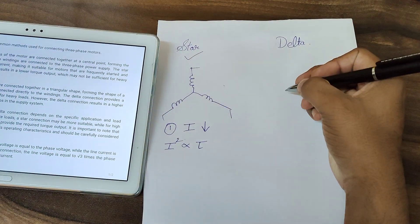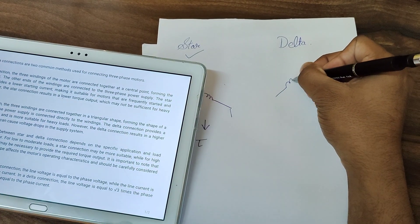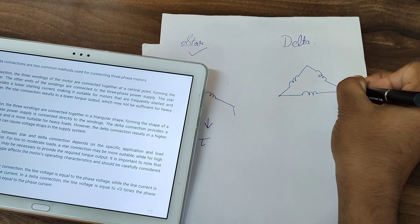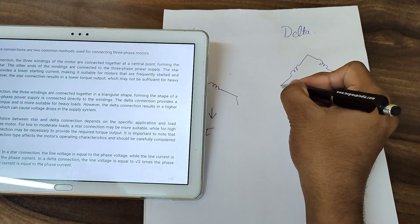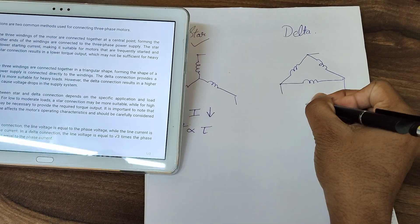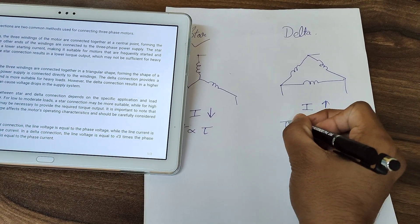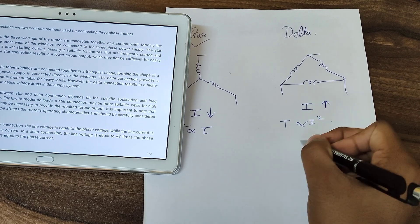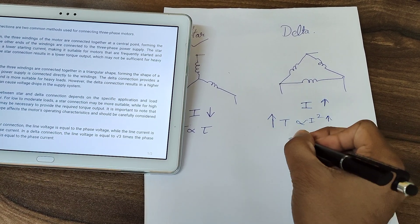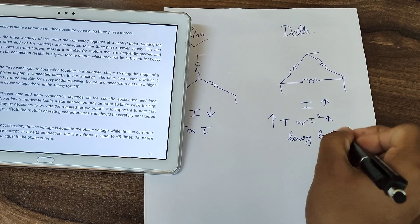In a delta connection, you will have one winding, then the second winding, and the third winding connected in a loop, and you give direct supply to the windings. The current will be high in this configuration. As I mentioned, torque is proportional to the square of current. If the current is high, then the torque will be high. So for heavy loads, the delta connection is preferred.